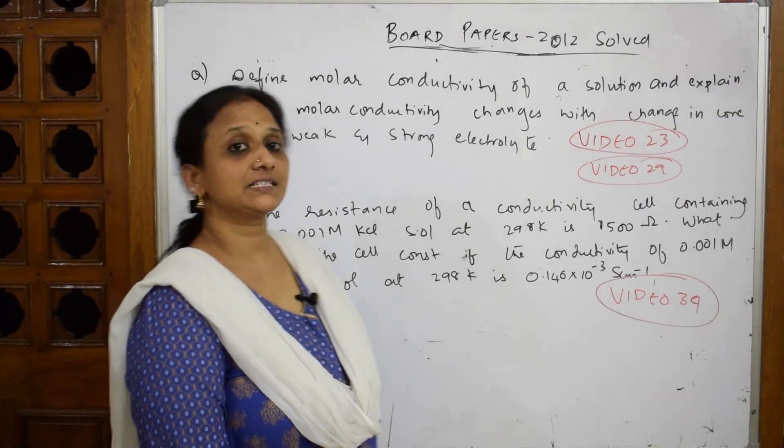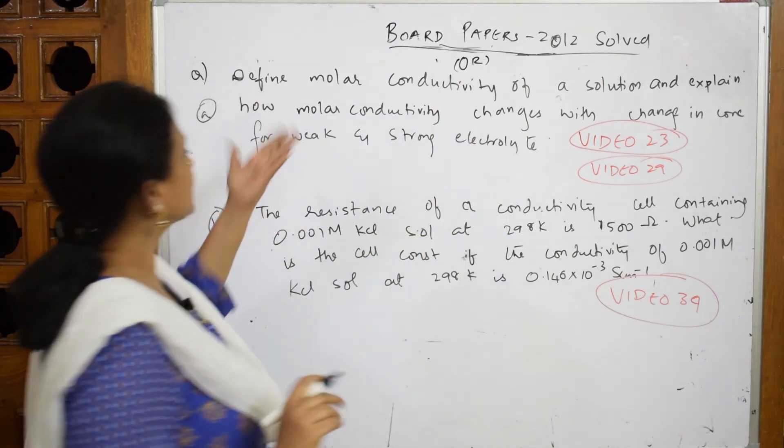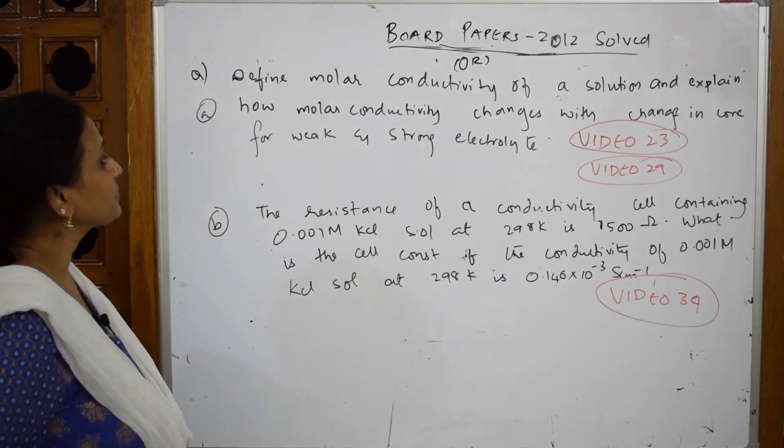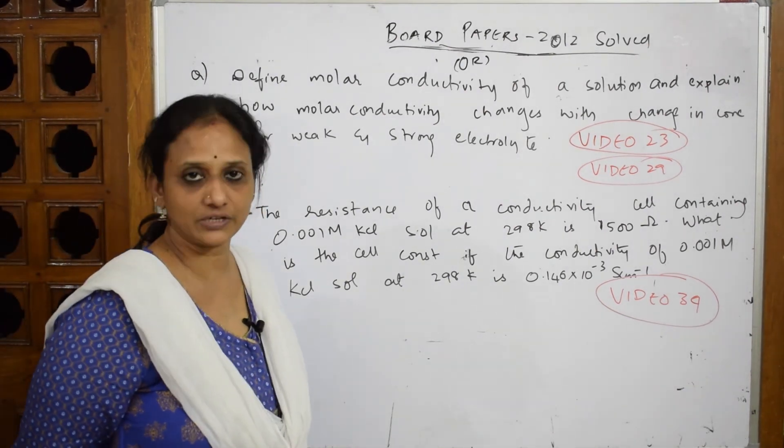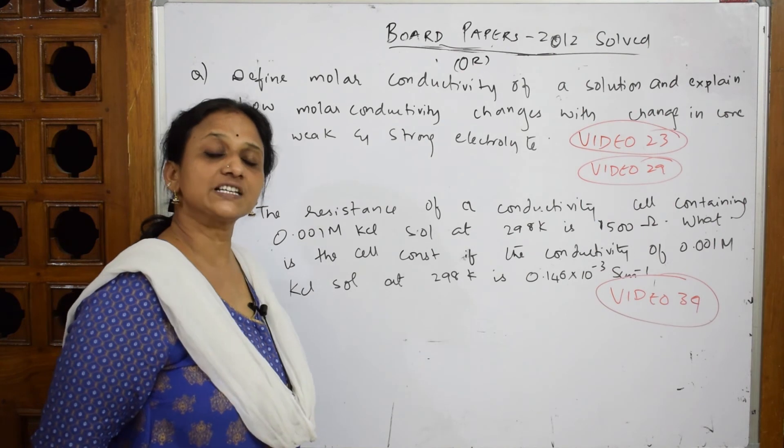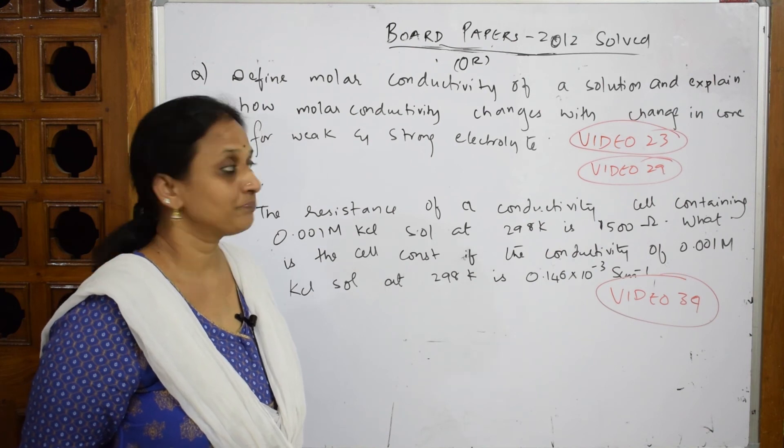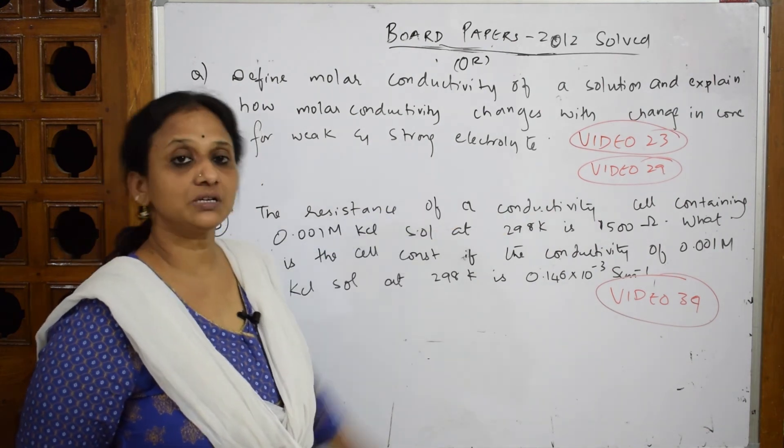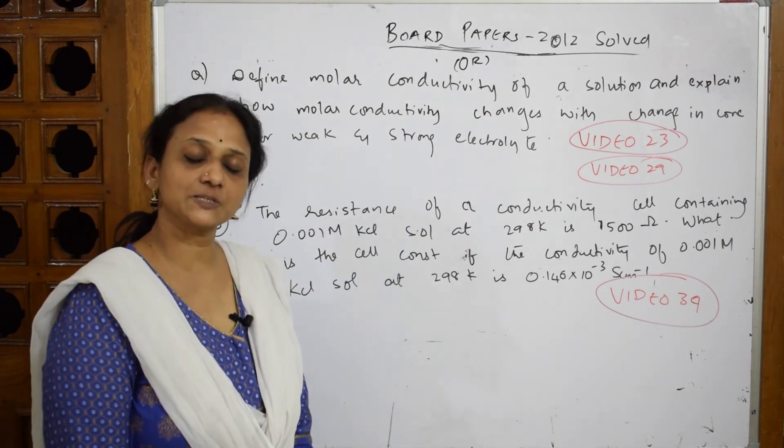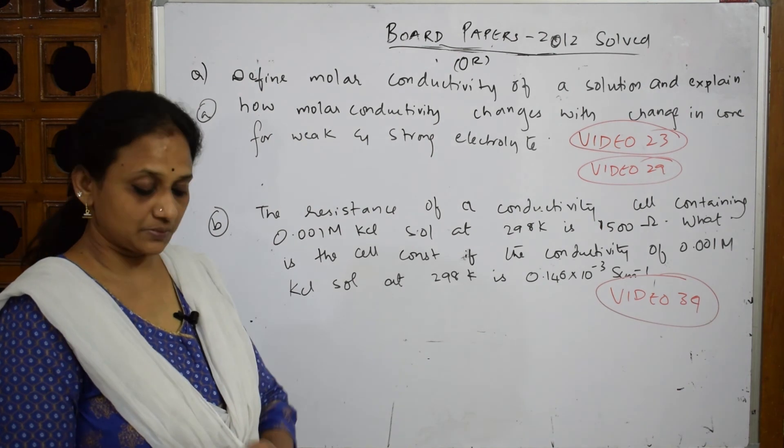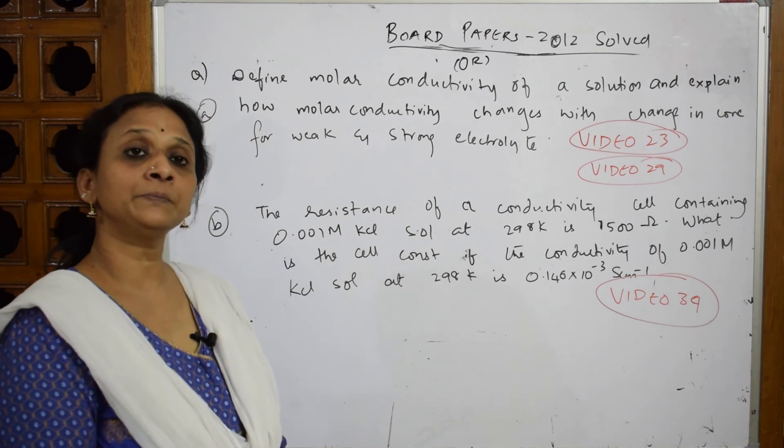Now let's come back to the 2012 paper. This is your choice question. They've asked us: define molar conductivity of a solution and explain how molar conductivity changes with change in concentration for weak and strong electrolytes. This concept was explained in terms of Kohlrausch's law. I picked up a graph and showed you how the molar conductivity varies. Please watch video number 23. Explanation is already given in video number 29, which explains Kohlrausch's law.